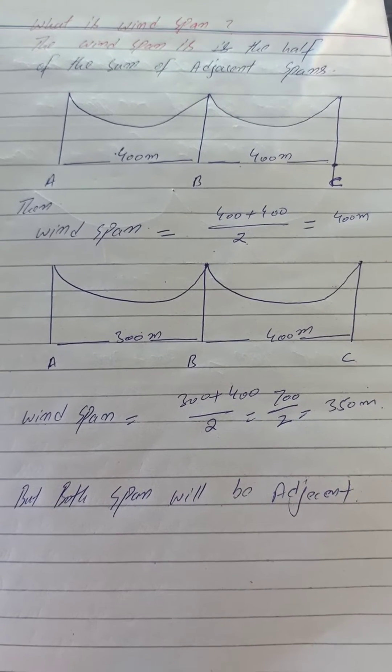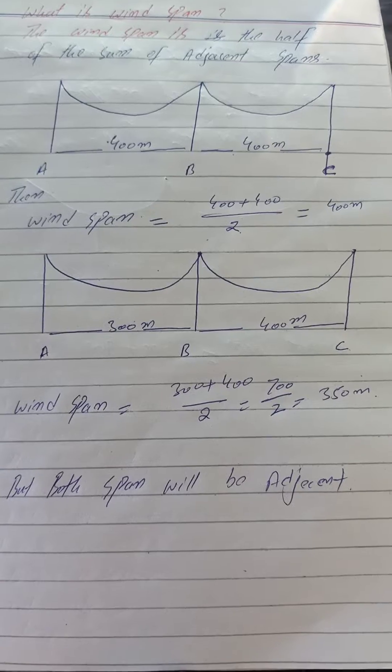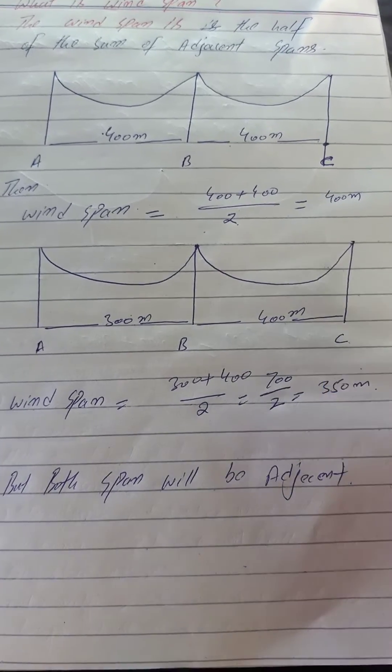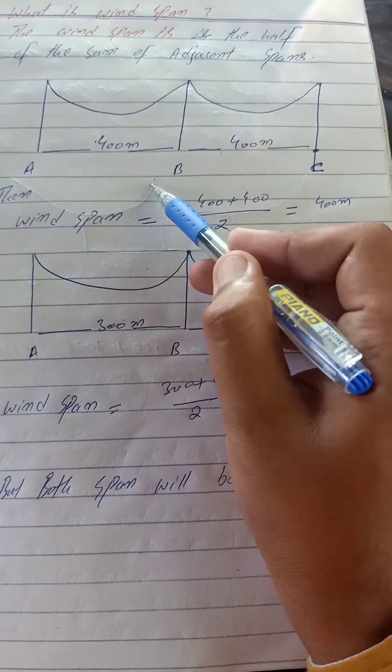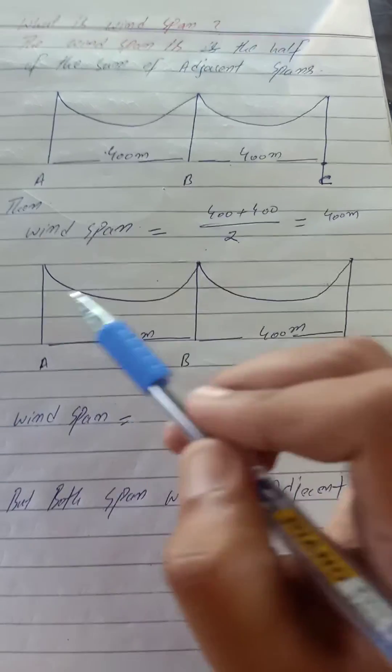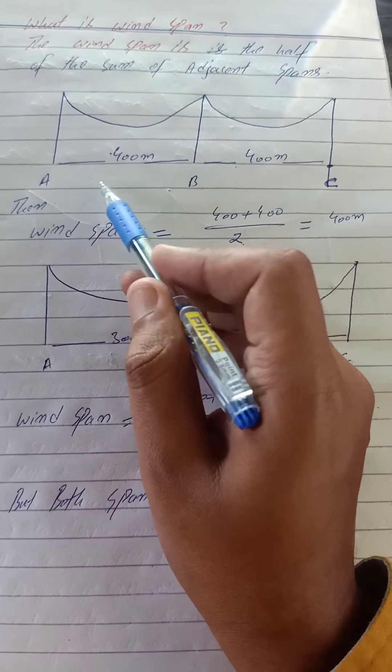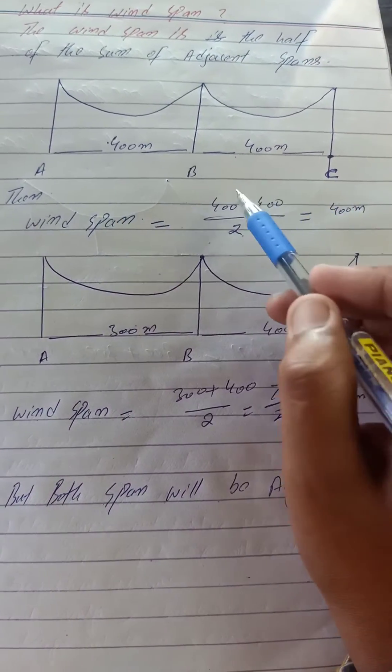The definition of the wind span is half of the sum of adjacent spans. For example, we have three poles A, B, and C. The span of A and B is 400 meters, and the span of B and C is 400 meters.